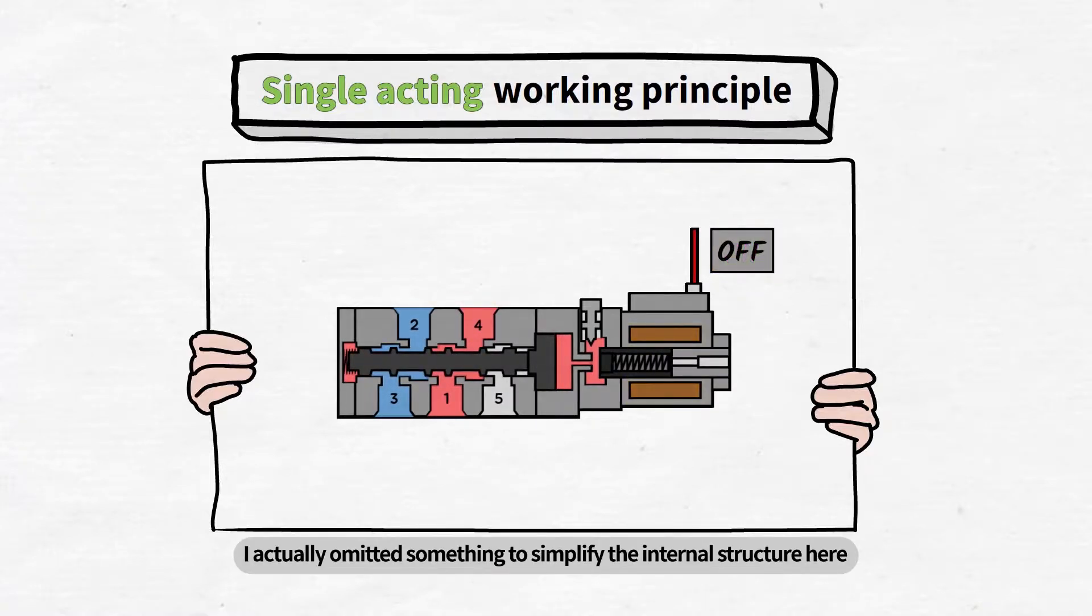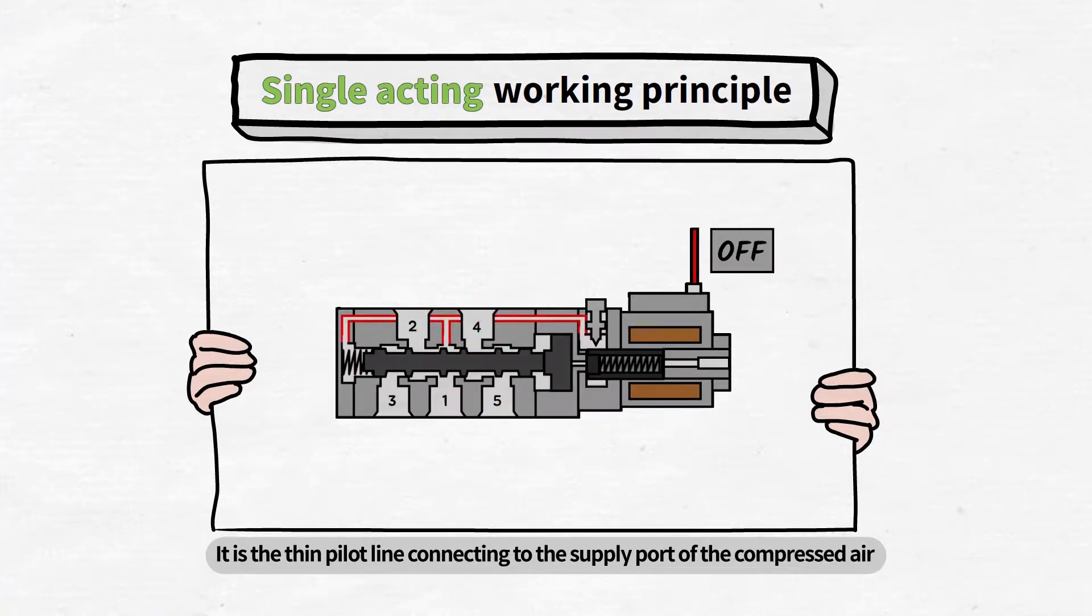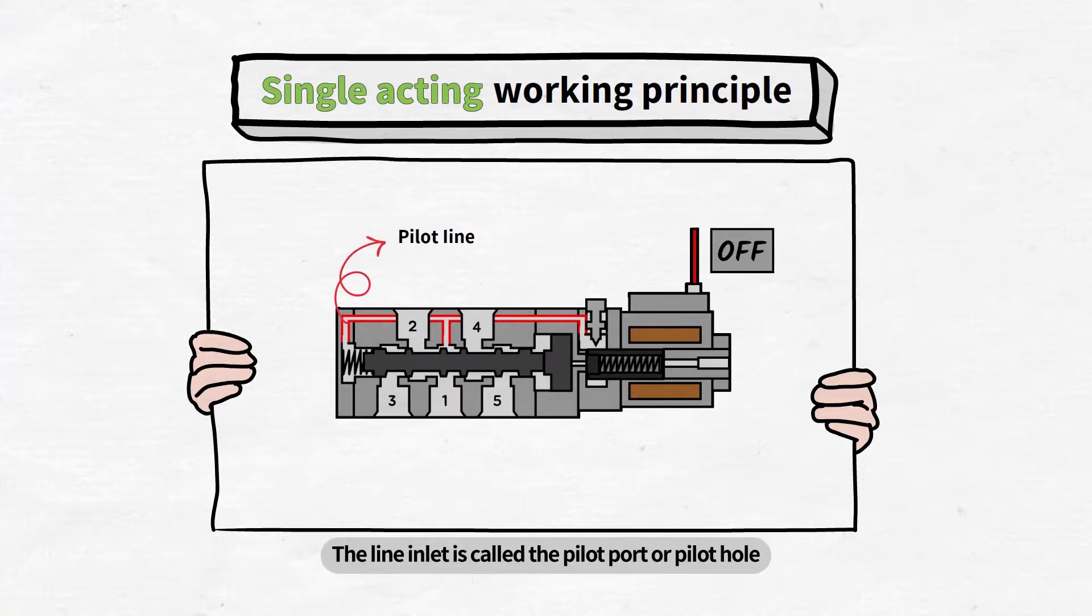I actually omitted something to simplify the internal structure here. It is the thin pilot line connecting to the supply port of the compressed air. The line inlet is called the pilot port or pilot hole. This pilot line is the key part of the pilot operation method.